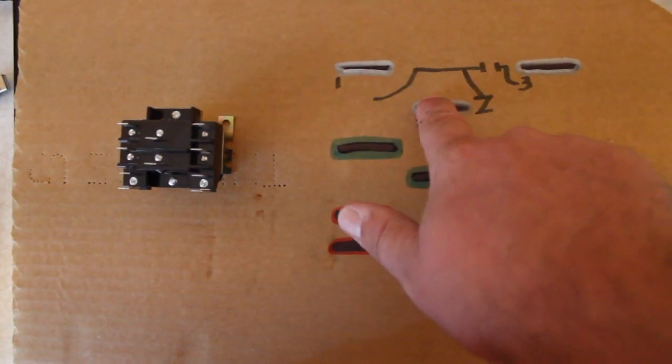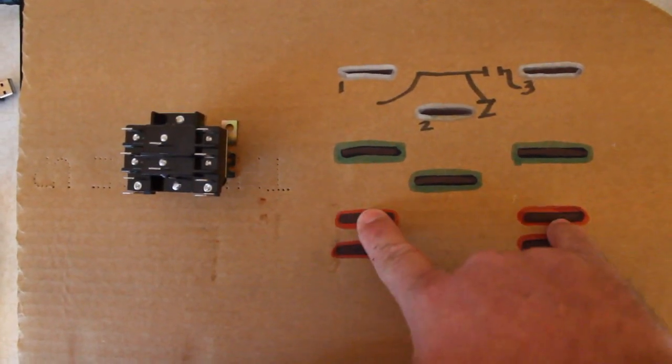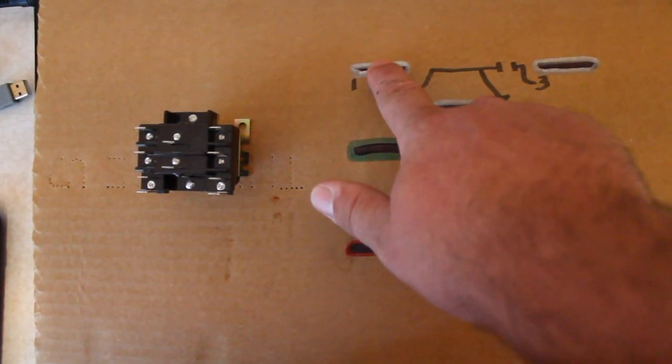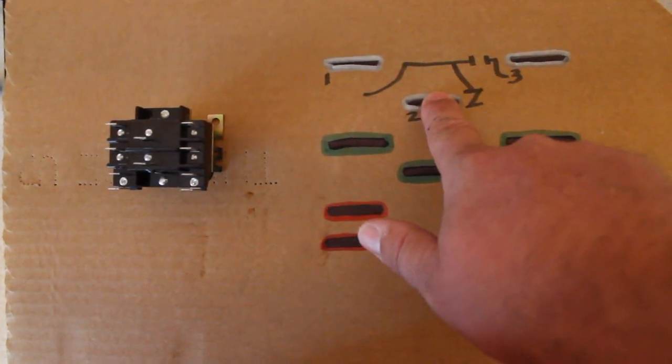Power flows through here but not through here. When you energize the coil, power flows through here, it is closed, and is open between one and two.